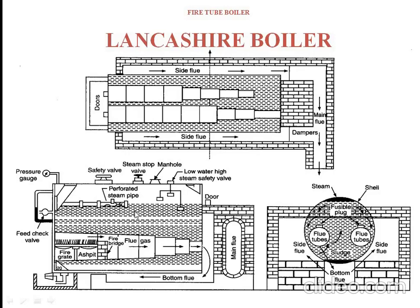Every boiler consists of mountings as well as accessories. Mountings are for safety purposes; accessories are for increasing the efficiency of the boiler. Here you have mountings such as: safety valve, steam stop valve, manhole, low water high steam safety valve, feed check valve, pressure gauge, and blow-off cock. The blow-off cock is used to empty the boiler and to remove dust particles or mud present inside. The pressure gauge reads the pressure of steam generated. The safety valve safeguards the system under high pressure. The steam stop valve allows use of the steam. The manhole allows a person to enter inside for inspection. The low water high steam valve alerts the system when water is low.